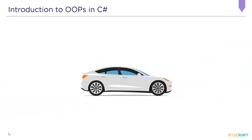Object-oriented programming is a programming paradigm that organizes software design around classes and objects. Classes are blueprints used to determine an object's properties and behaviors, and objects are real-world entities with their fundamental properties and behaviors. Let's take a look at what classes and objects mean in object-oriented programming in C#.